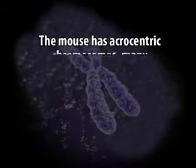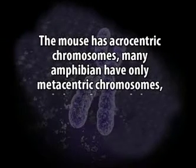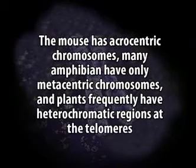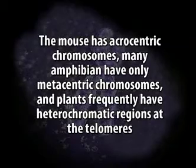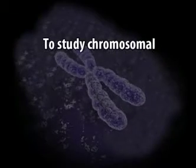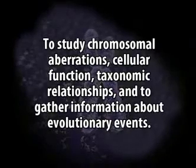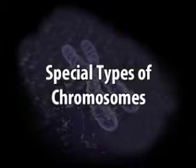Some species may have special characteristics; for example, the mouse has acrocentric chromosomes, many amphibians have only metacentric chromosomes, and plants frequently have heterochromatic regions at the telomeres. Karyotypes can be used for many purposes, for example to study chromosomal aberrations, cellular function, taxonomic relationships and to gather information about evolutionary events.